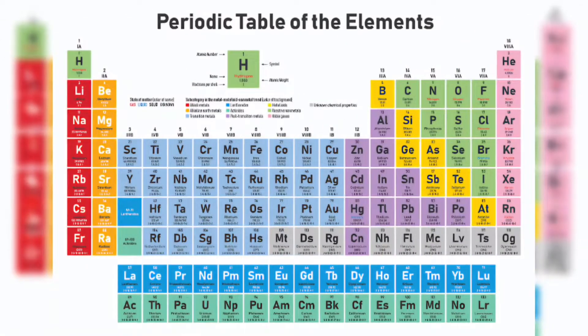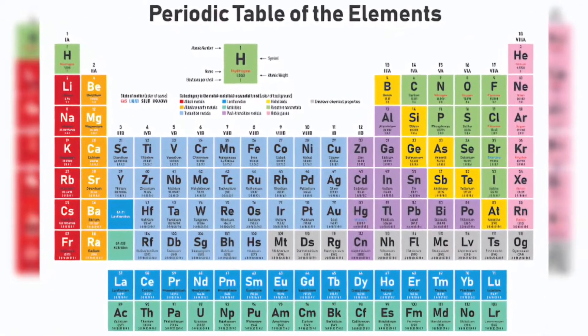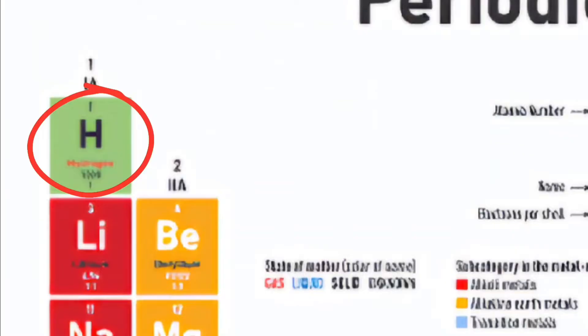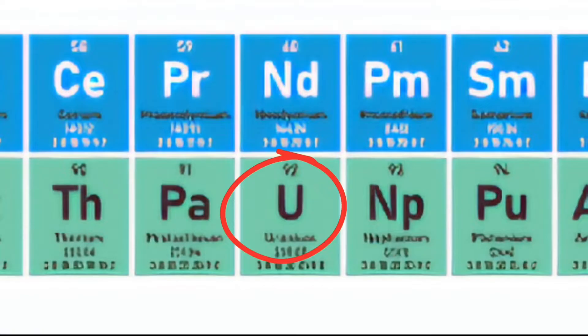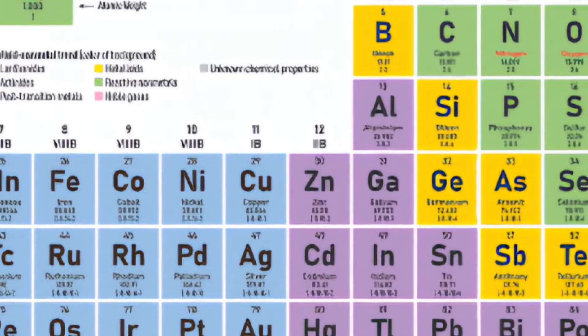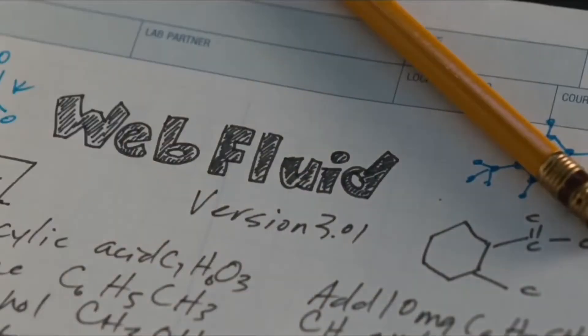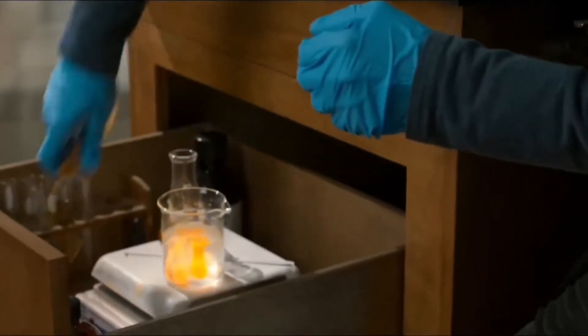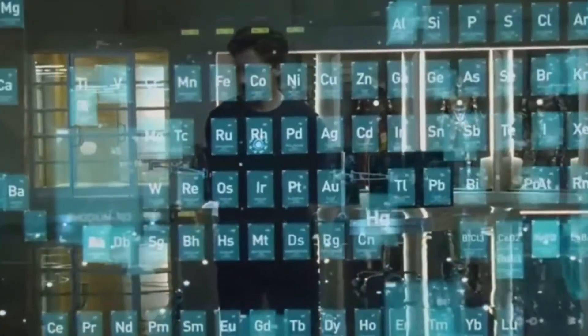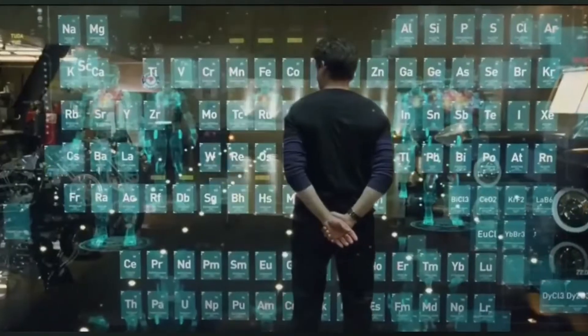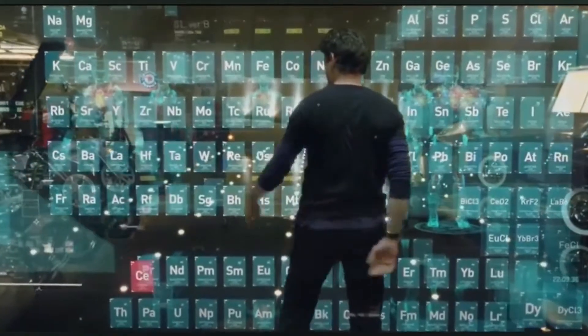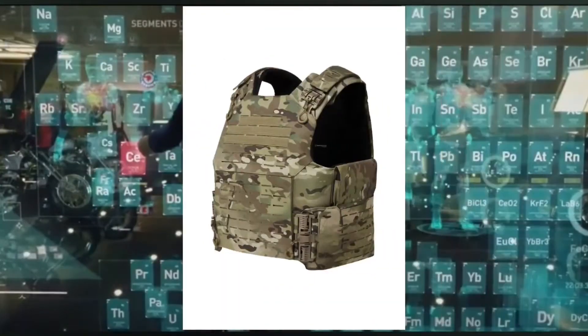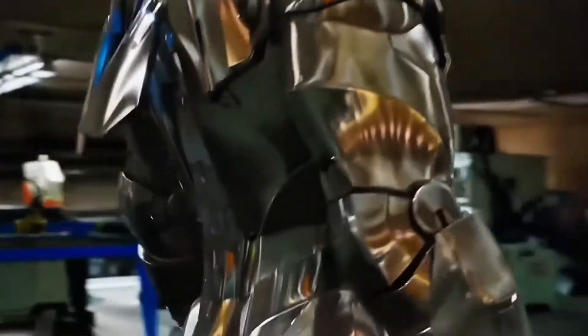Do you remember this table? This is the periodic table — a list of all the elements in the world: hydrogen, oxygen, iron, copper, uranium, and so on. You might call them atoms or elements, and you were probably taught to memorize them in school. But what's really important is not memorizing them, but understanding the purpose of this table. The periodic table's main function is to determine the material used in various technologies, from batteries and lightbulbs to nuclear weapons and even the Iron Man suit.